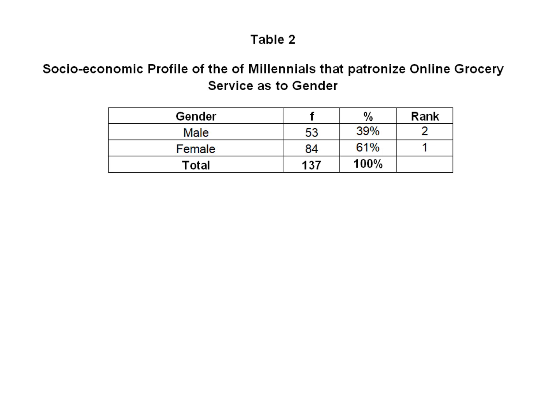This research focuses on the online grocery services and the socioeconomic profile of millennials as to gender. As you can see on the table, it focuses on gender — male and female. The frequency for male is 53, the frequency for female is 84, and the total is 137.